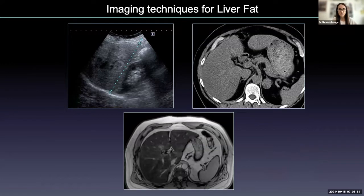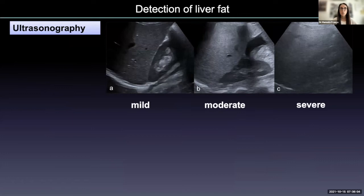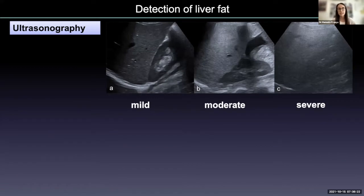What are the imaging techniques for assessing liver steatosis? We can recognize steatosis with ultrasound, CT, or MR. With ultrasound, we recognize liver steatosis as increased echogenicity of the liver parenchyma, mainly when compared with the parenchyma of the right kidney. Steatosis is commonly rated as mild, moderate when there is blurring of the wall of the portal or hepatic veins, or severe when the acoustic attenuation impairs observation of the deepest hepatic regions and the diaphragm.